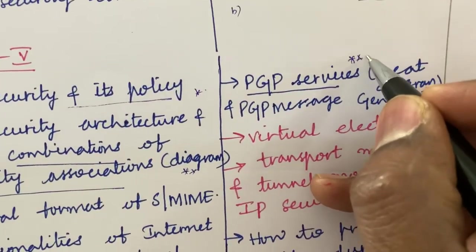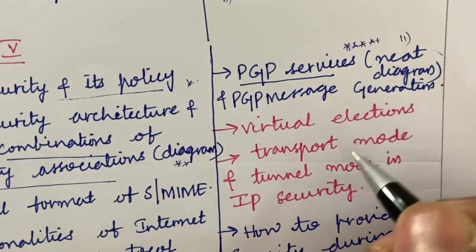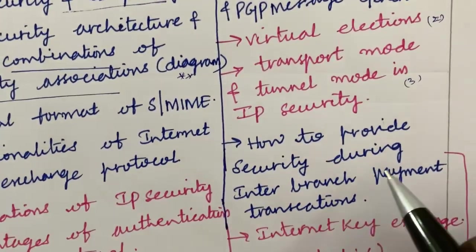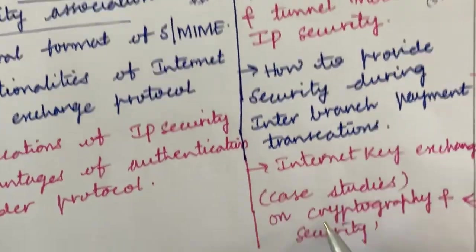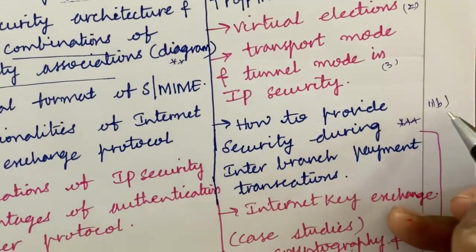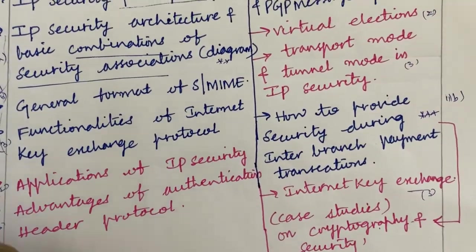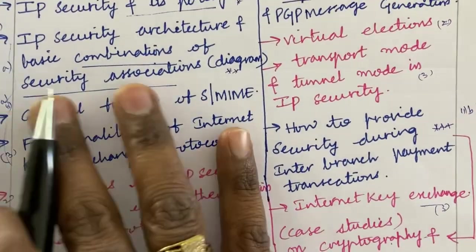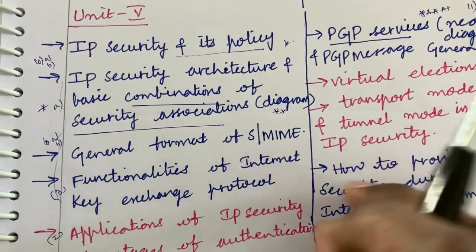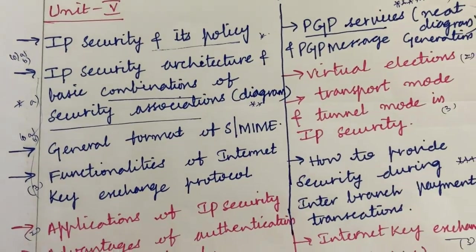PGP services is one of the most important questions in the 11th question slot — PGP message generation along with a neat diagram. Virtual Private Networks, transport mode versus tunnel mode in IP security may be a 3-mark question. How to provide security during inter-branch payment transactions may be a case study on cryptography security. Internet Key Exchange may also be a 3-mark question. Do not expect the question paper to be direct — Unit 5 is split across 10A/10B and 11A/11B, and you need to be thorough with all combinations.